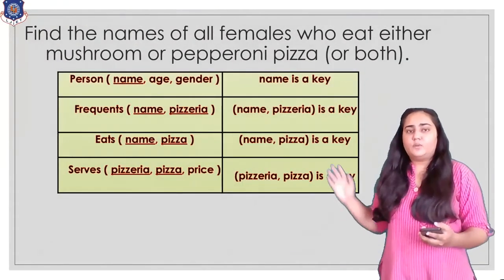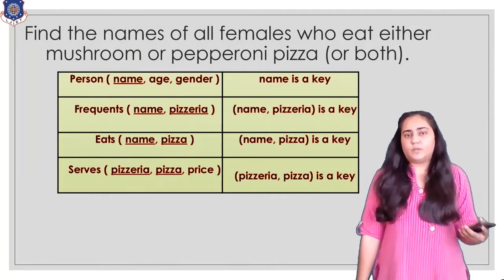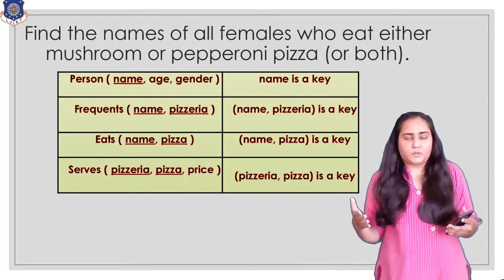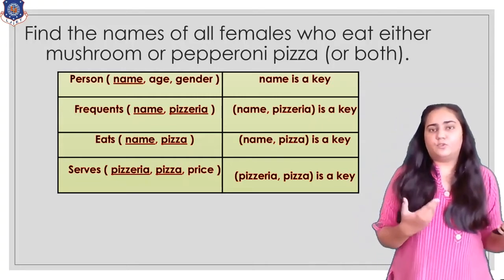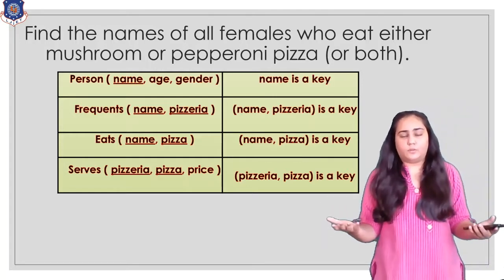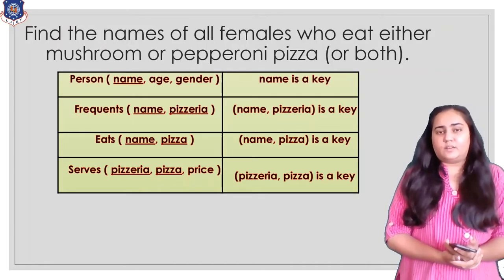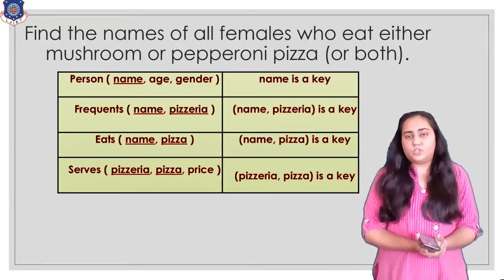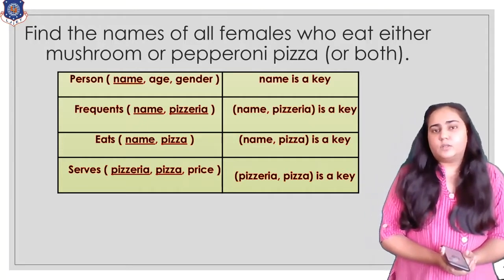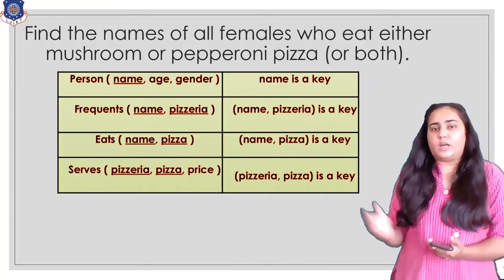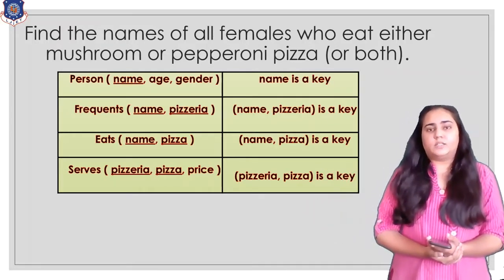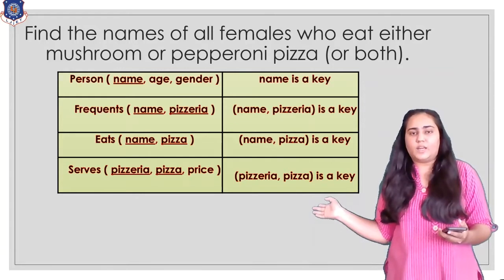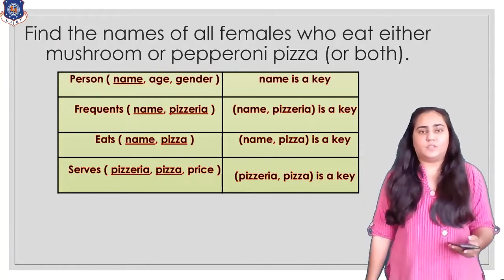The next query says: find the names of all females who eat either mushroom or pepperoni pizza, or both. What I want is the names of females, and from where can I get names of females? From the person table, because that is the only table that has the gender column. To find the type of pizza I would have to use either the eats table or the serves table. I cannot use serves because there is nothing in common between person and serves, so I have to use the eats table.